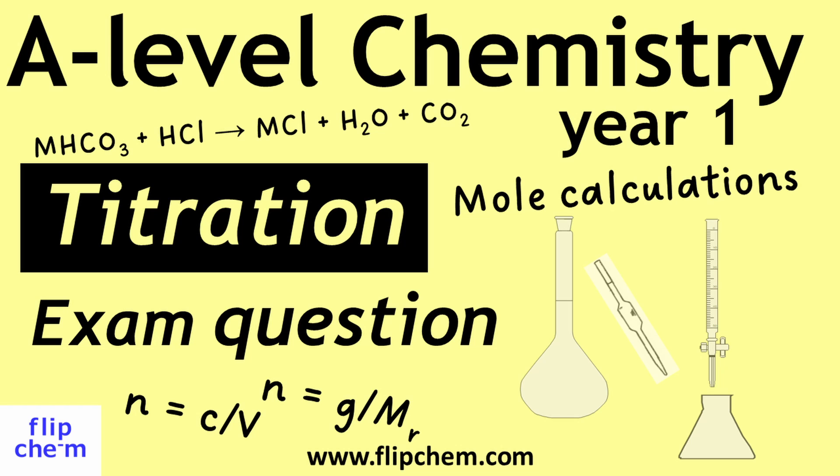Welcome everyone. In this video we're going to look at an A-level chemistry titration question. Details are in the description. I'll show you how to work out the average titer from a table of results, use this titer to work out the molar mass of a carbonate, and finally look at practical ways to reduce the percentage uncertainty associated with using a burette. Let's get started.